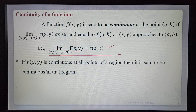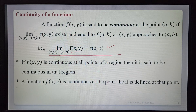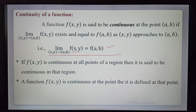If f(x,y) is continuous at all points of a region, then it is said to be continuous in that region. At every point of the region it is continuous, then the function is continuous over the entire region. Note: if a function f(x,y) is continuous at a point, then it must be defined at that point — the function being defined there is compulsory.